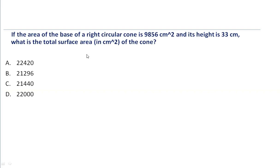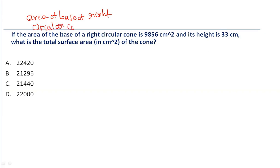The area of the base of the right circular cone is 9856 cm² and its height h is equal to 33 cm. We have to find out the total surface area.